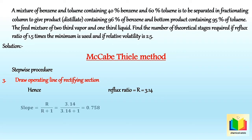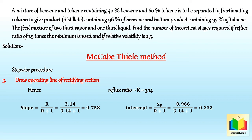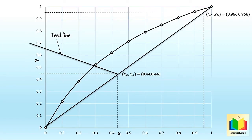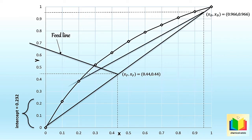Hence the slope of the rectifying operating line = 3.14 / (3.14 + 1) = 0.758, and the intercept = 0.966 / (3.14 + 1) = 0.232. Using this slope and intercept, we draw the operating line of the rectifying section. Since we already plotted point (xD, xD) on the diagonal, we draw the operating line from (xD, xD) with intercept 0.232.